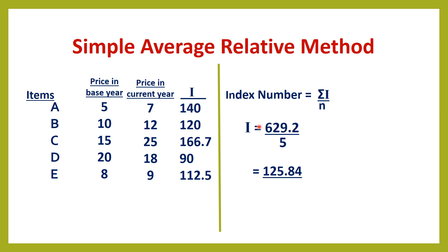Sigma I is 629.2 divided by N. There are 5 items, so dividing by 5, the index number is 125.84. In this video, we have discussed the unweighted methods used in the construction of price index numbers. The weighted methods are discussed in another video. Thank you for watching. For more videos, subscribe to the channel.